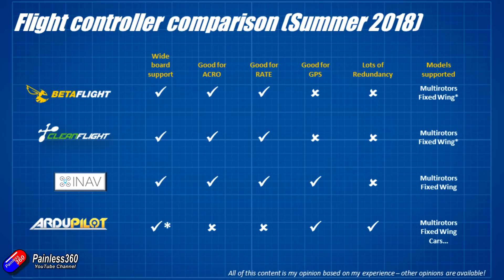All of this software supports multirotors. Betaflight and CleanFlight support fixed wing but it's basic support in my opinion. iNav Flight is really good at fixed wing — it has a PIFF controller (proportional, integral, and feed forward) which is a far better way to control the surfaces on a physical wing. ArduPilot will do just about everything, and there's not much you can build that you couldn't turn into an autonomous vehicle using a Pixhawk and ArduPilot.